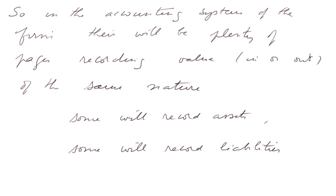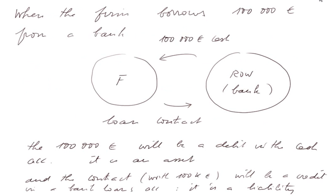In the accounting system of the firm, there will be plenty of pages regarding value in or out of the same nature. Some will record assets, and some will record what's called liabilities. Let's look at an example: when the firm borrows 100,000 euros from a bank. Retail banks manage checking accounts, saving accounts, receive deposits, and also extend loans. Here we deal with a retail bank lending money — a bank lends 100,000 euros of cash to firm F.